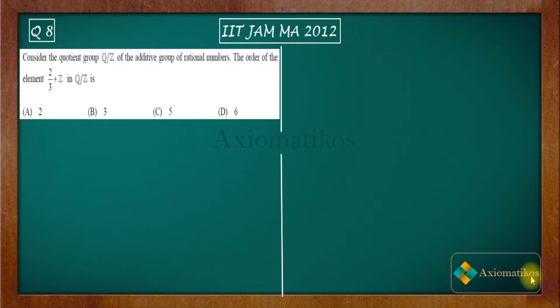This is a problem from the topic abstract algebra. It says: Consider the quotient group Q/Z of the additive group of rational numbers. The order of the element 2/3 + Z in Q/Z is...